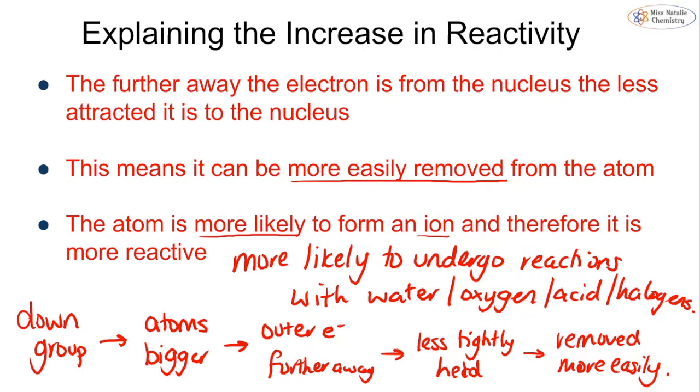So the atom wants to become an ion. So it is more likely to give away that electron.